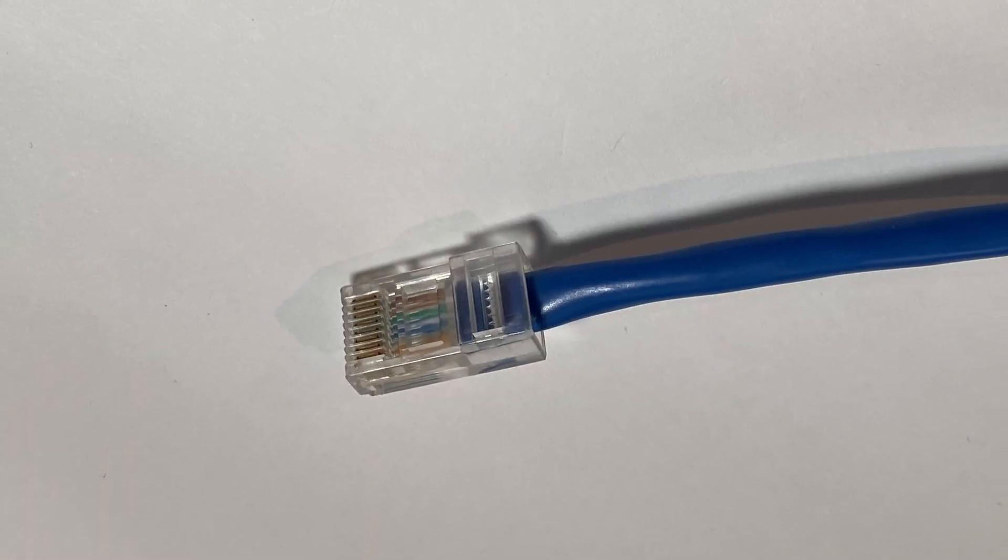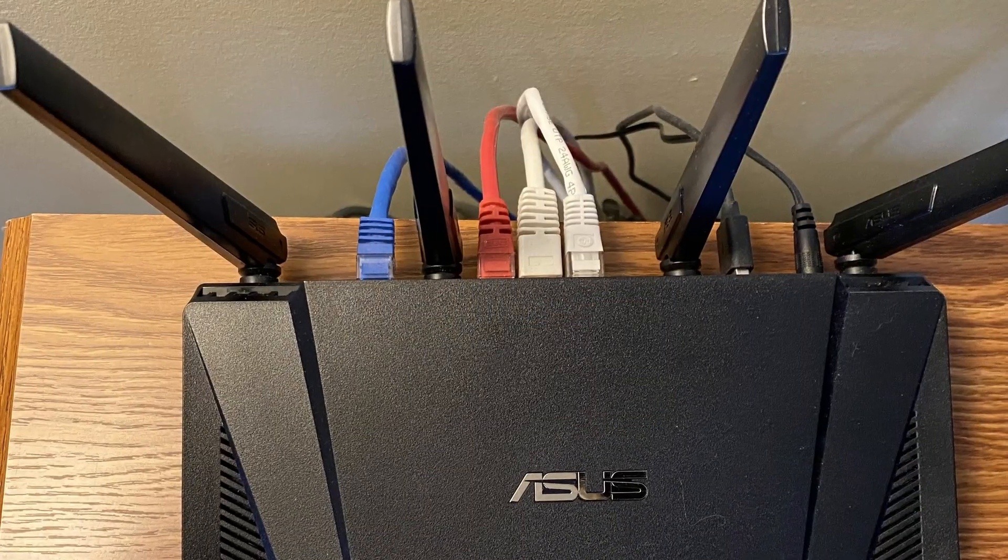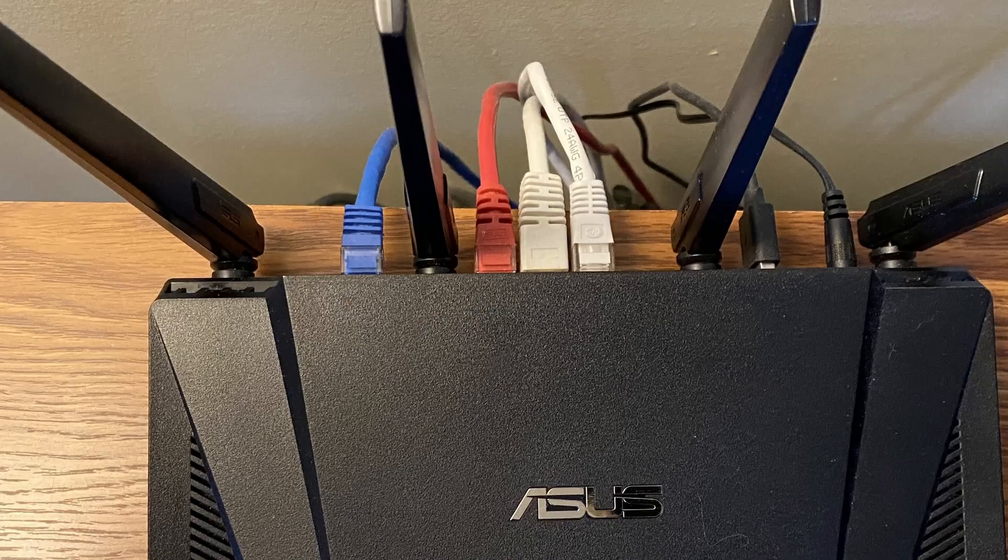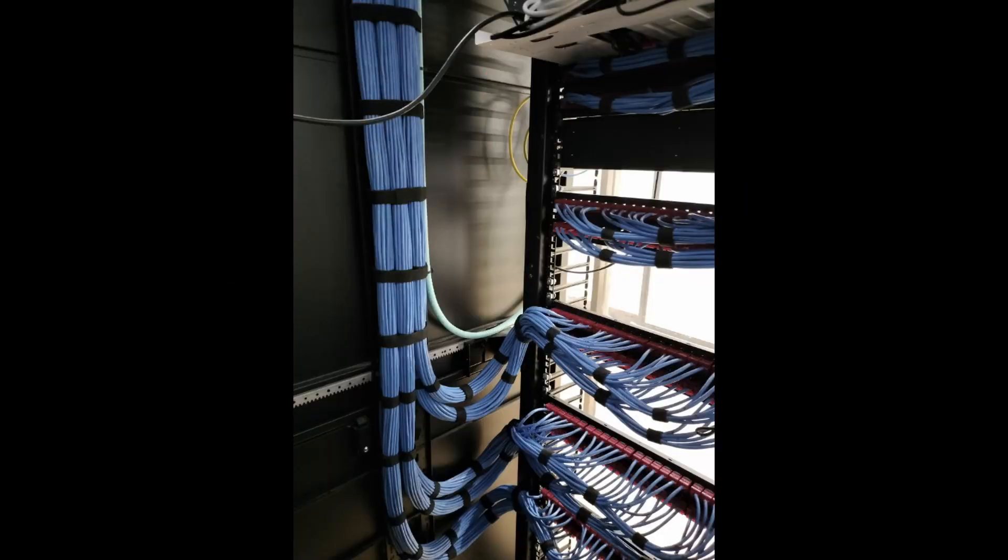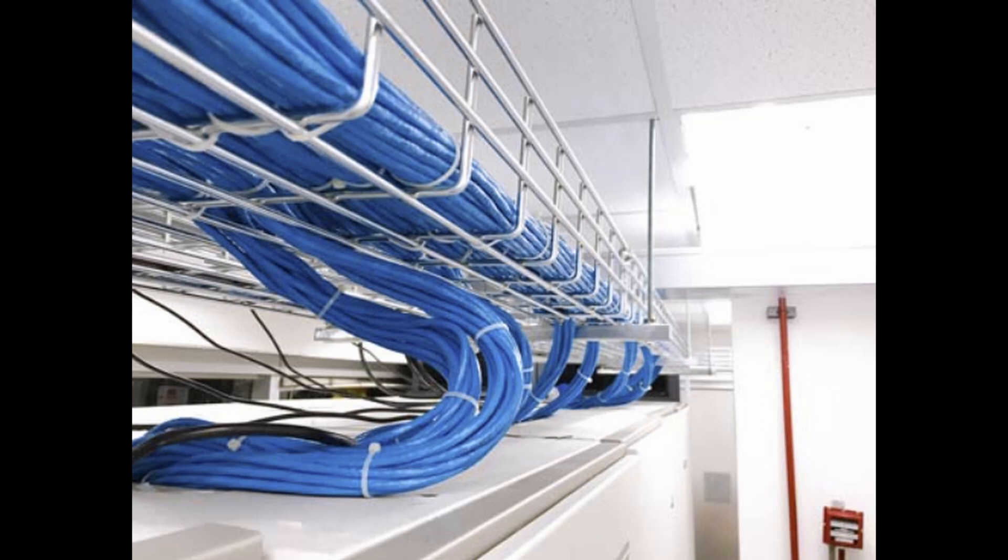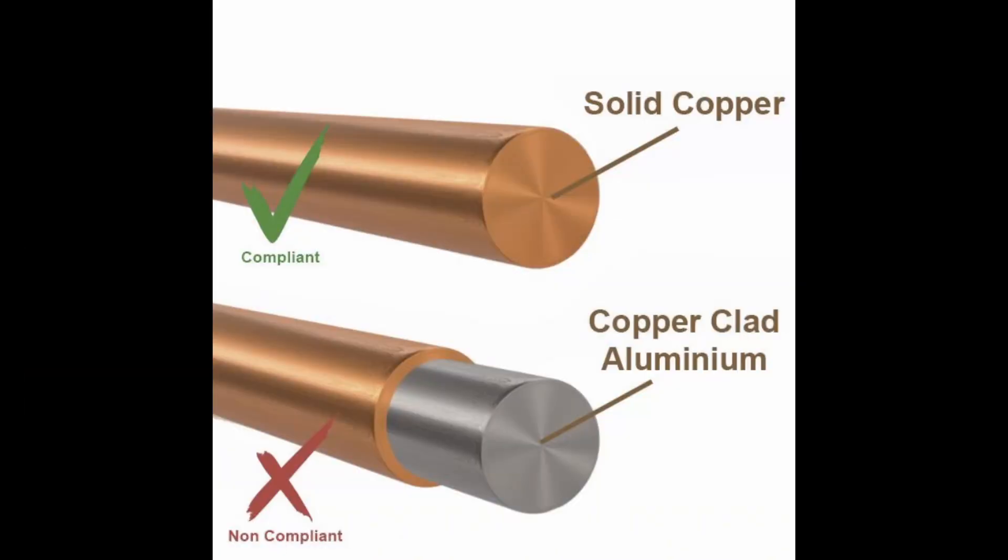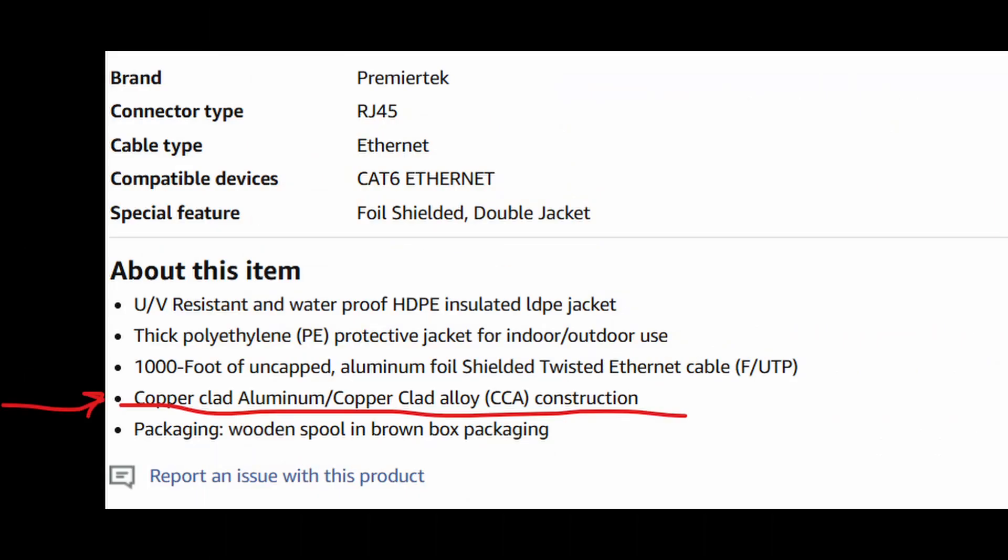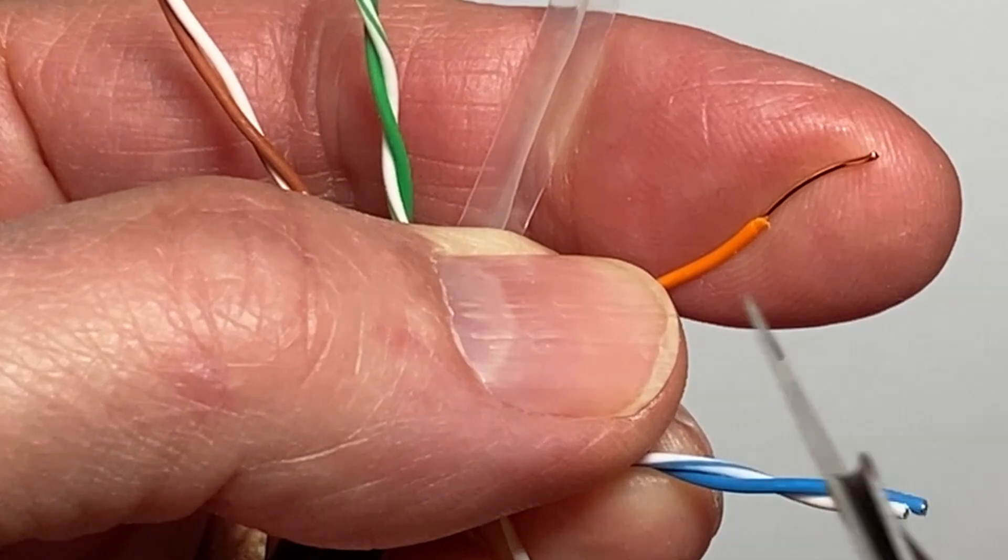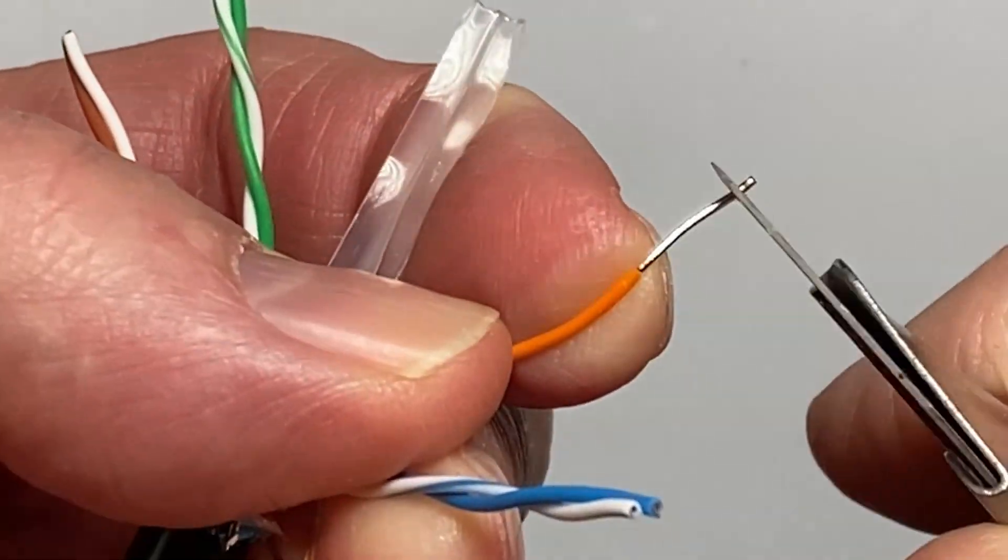We're talking about CAT5 or CAT6 Ethernet cable just like you've got plugged into your PC or router. First of all, with the computer and internet explosion, this stuff is ubiquitous and therefore mass produced and generally quite affordable. Although buyer beware, you get what you pay for. I'm going to talk a bit more about copper clad aluminum versus solid copper conductors near the end of this video.